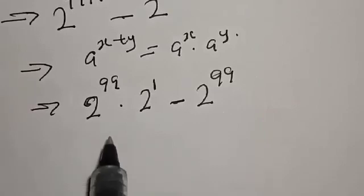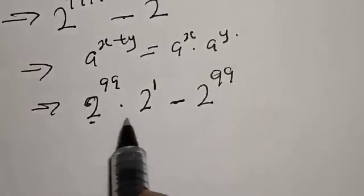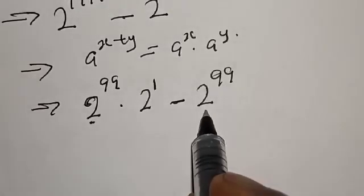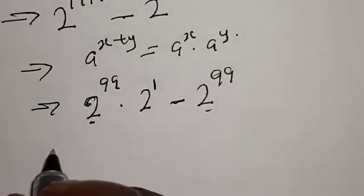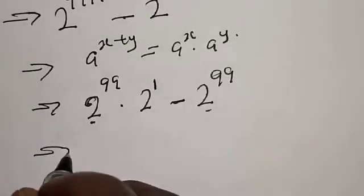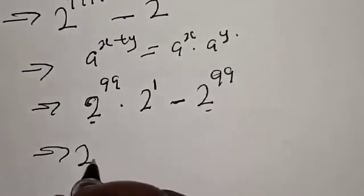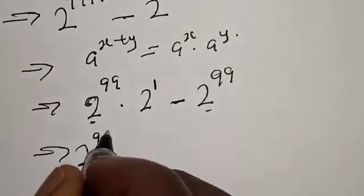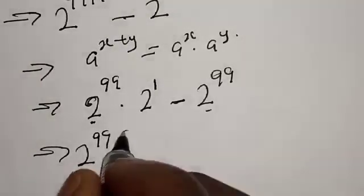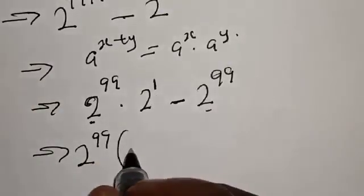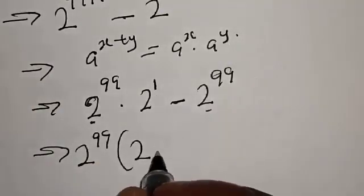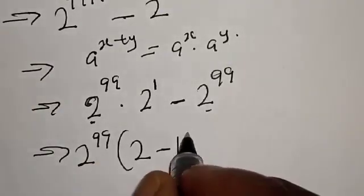From here we have 2 raised to power 99 in both terms, so let's factor it out. This implies that we have 2 raised to power 99 into bracket 2 raised to power 1 — which is the same thing as 2 — minus 1.